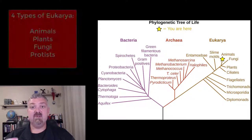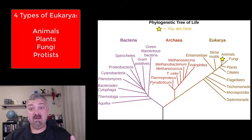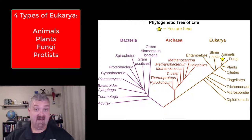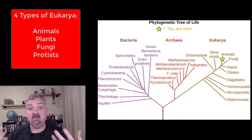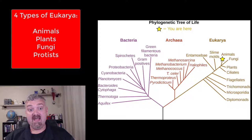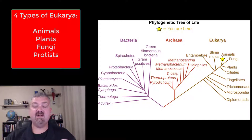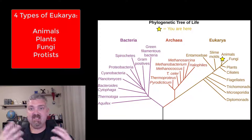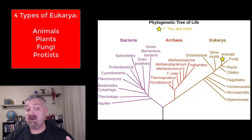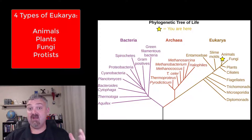And then we have the eukarya. The eukaryotes, the ones we care about, fall into four groups. You have the animals, like us; you have the plants; you have the fungi; and you have the protists. So that's the one that's not on here. A protist is basically a grouping of eukaryotes that are not plants, animal, or fungi. Pretty much everything else falls into the group protists.